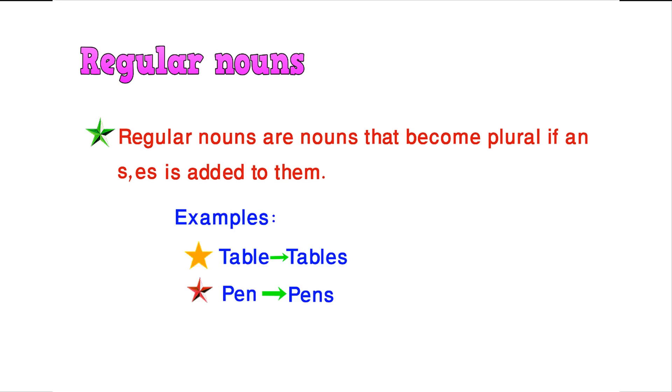When we talk more than one thing, we will say pen. When we talk more than one thing, we add the S, then we add the S.